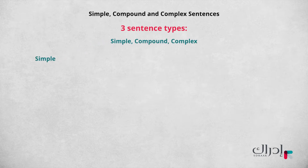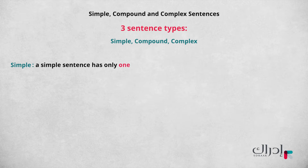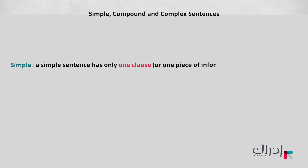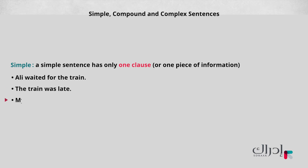The first one is simple. A simple sentence has only one clause or one piece of information. Examples are: Ali waited for the train. The train was late. My name is Elizabeth.